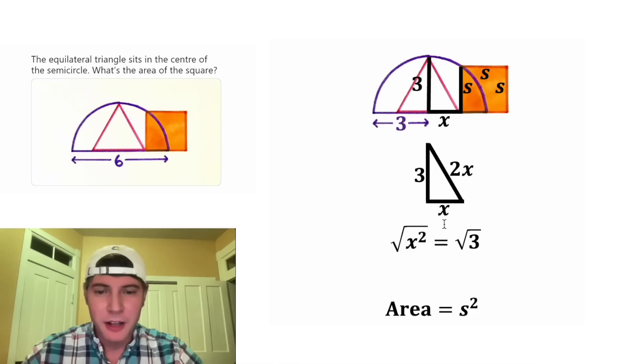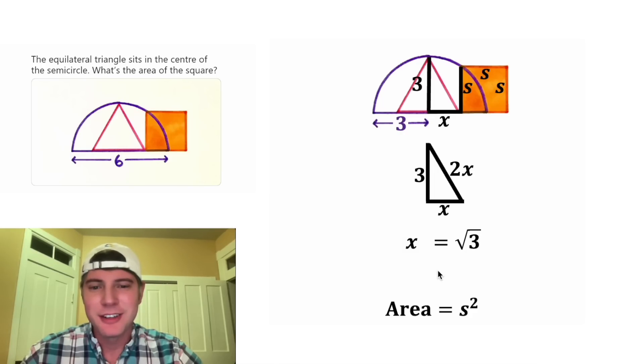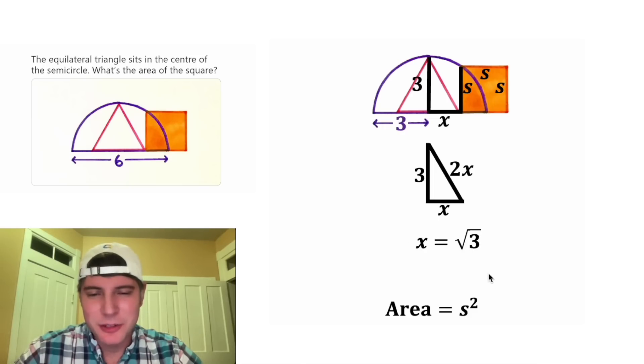Let's square root both sides. On the left-hand side, the square root and the square will cancel each other out. And now we've solved for X. X is equal to the square root of 3.